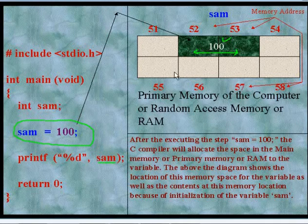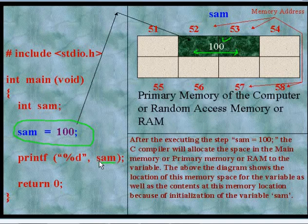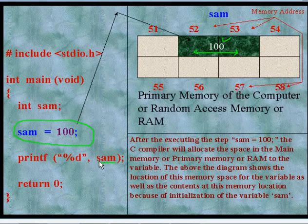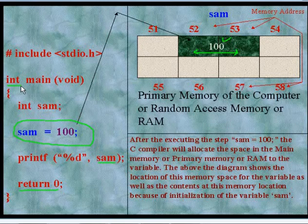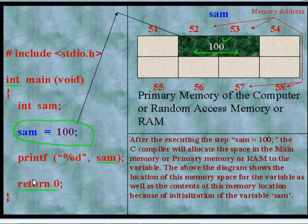Now one more point which I have not explained in the previous program is this return 0. Here we have used int before main, so main will return an integer value to the operating system. Here I have written that value, so this statement is a must. We must include this statement over here. Is it clear? Thank you.